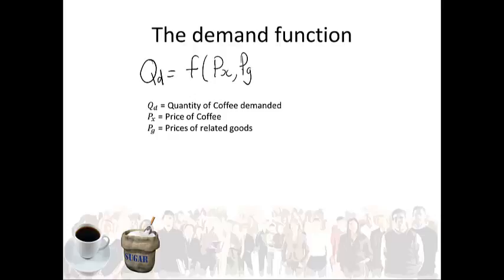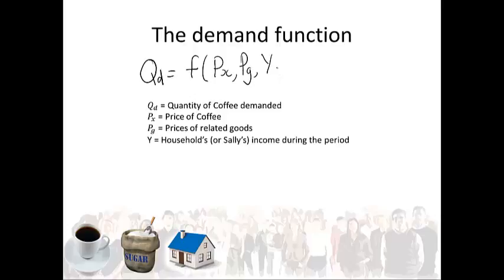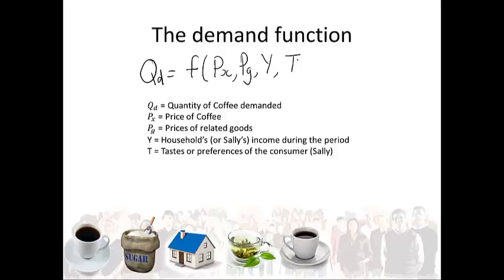Another factor that will influence the quantity demanded is the amount of income Sally has. If Sally is very rich, she might buy all the coffee she wants. But if she only gets a small income, she might only buy one cup a day. Then obviously, the quantity of coffee Sally demands will also depend on how much she likes coffee — therefore her tastes and preferences. If she is a true coffee enthusiast, she will have a high demand for coffee. But if she only likes coffee a little bit, she will demand a lower quantity of coffee.